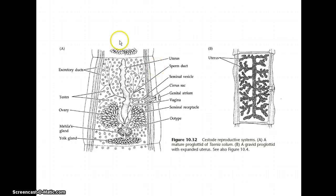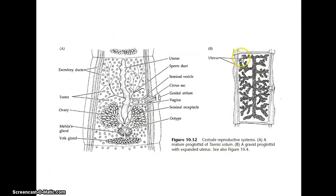On the left is a mature proglottid; on the right is what's called a gravid proglottid. Once the eggs become fertilized, they grow within the uterus — the uterus expands and is just full of fertilized eggs that are ready to develop into larvae. Each proglottid will break off, and basically a bag of eggs ends up in the environment.